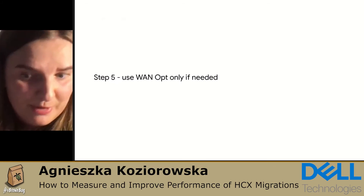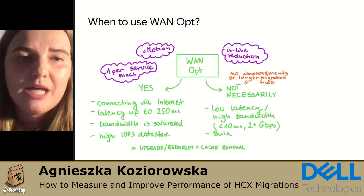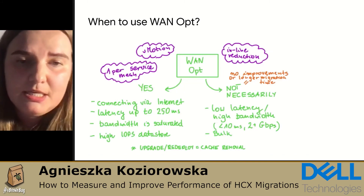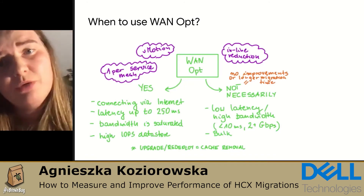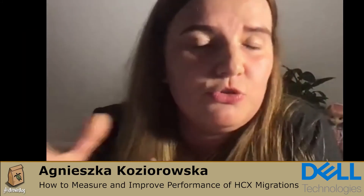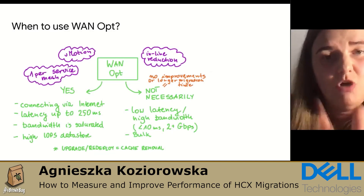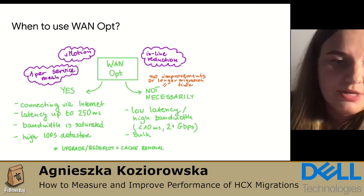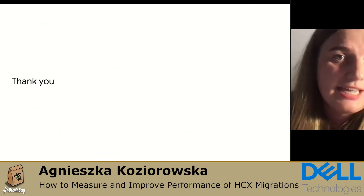The last thing I was surprised to learn is that you don't always have to use WAN optimization. WAN optimization is inline deduplication and compression — it helps when you're connecting via internet, when you have high latency on your link, or when your bandwidth is saturated. Usually when migrating to cloud, bandwidth conditions are very good: low latency, high bandwidth. So you don't necessarily need WAN optimization, especially since it also requires a high-performance datastore on-prem and in the cloud — and on-prem customers sometimes struggle to find a good enough datastore. Those were a few pieces of advice for anyone starting to work with HCX migrations. Thank you for listening, and I hope it's helpful.